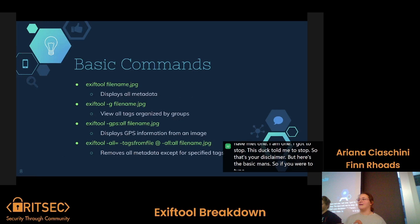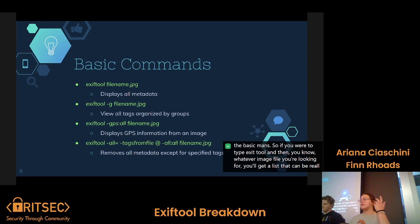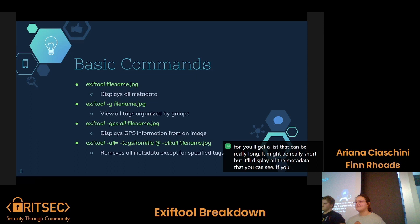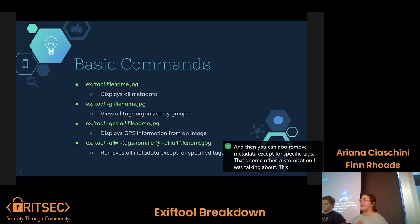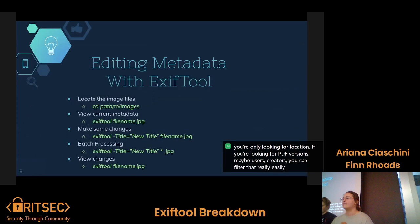Here are some basic commands. If you type ExifTool and then whatever image file you're looking for, you'll get a list — it can be really long or really short — displaying all the metadata. If you want to look for specific tags, you can use -G to show specific things. If you want GPS, that's where you'll find geolocation: where the image was taken and its coordinates. You can also remove metadata except for specific tags — that's some of the customization. You can filter by camera information, location, PDF versions, users, or creators.